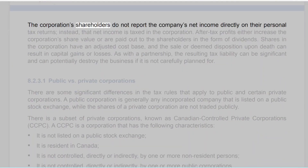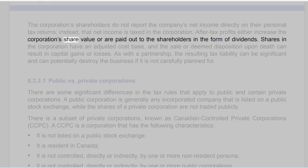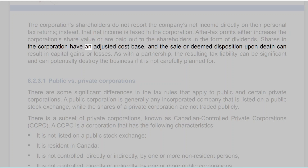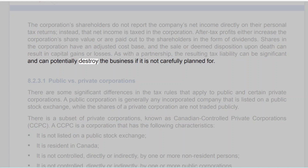The corporation's shareholders do not report the company's net income directly on their personal tax returns; instead, that net income is taxed in the corporation. After-tax profits either increase the corporation's share value or are paid out to the shareholders in the form of dividends. Shares in the corporation have an adjusted cost base, and the sale or deemed disposition upon death can result in capital gains or losses. As with a partnership, the resulting tax liability can be significant and can potentially destroy the business if it is not carefully planned for.